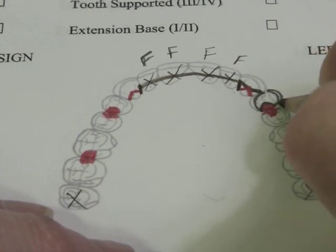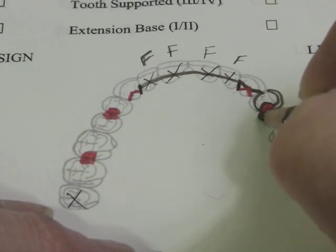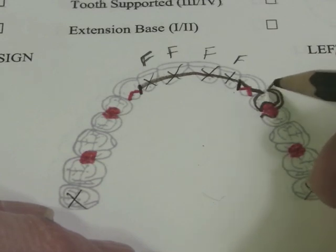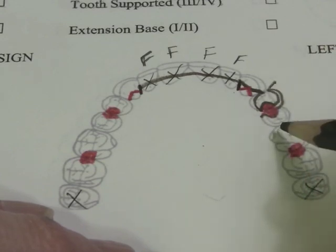We'll come down with the lower border. It comes up and circles this rest right here. And we show that that is the direct retainer side by placing a little crosshatch there.